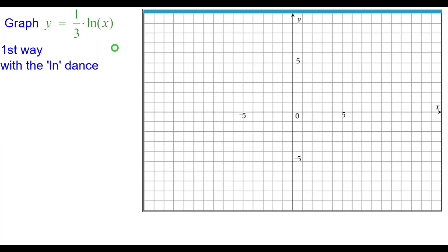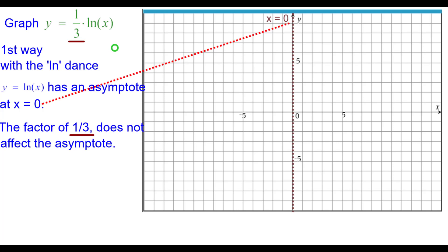The first way is with the natural log dance. y equals the natural log of x has an asymptote at x equals zero, the y-axis. The factor of one-third, the coefficient here, does not affect the asymptote, so we'll go ahead and draw in our asymptote.